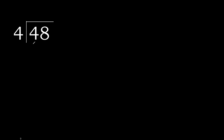48 divided by 4. 4 is not less, therefore work with 4. Here, 4 multiplied by which number is nearest to 4 but not greater? 4 multiplied by 2 is 8 — 8 is greater. Multiplied by 1 is 4 — is not greater. 4 minus 4 is 0.